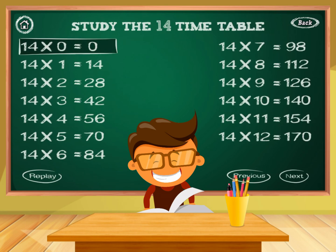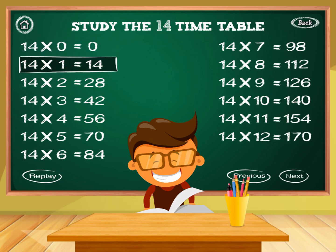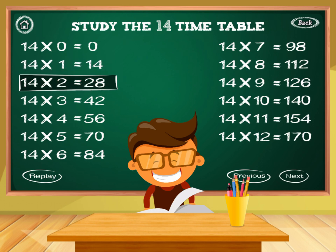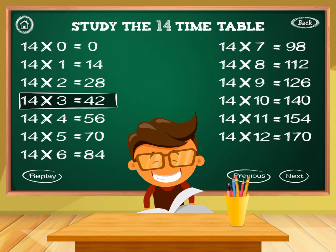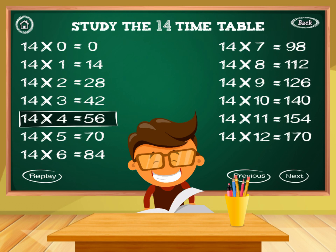Timetable of 14. 14 times 0 equals 0. 14 times 1 equals 14. 14 times 2 equals 28. 14 times 3 equals 42. 14 times 4 equals 56.